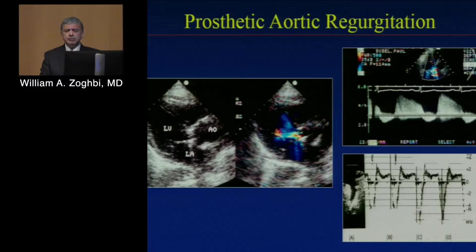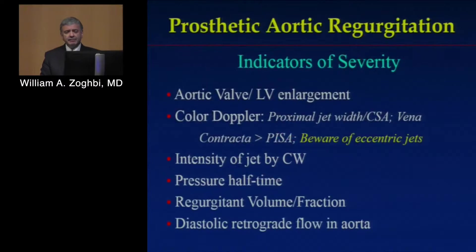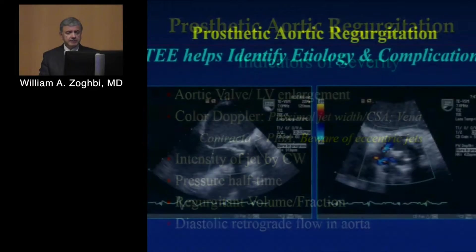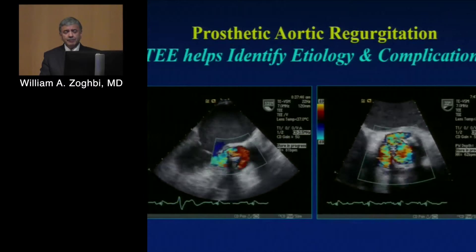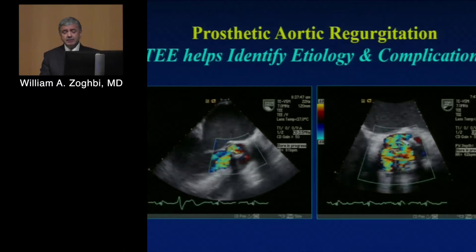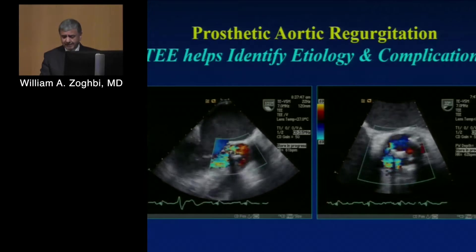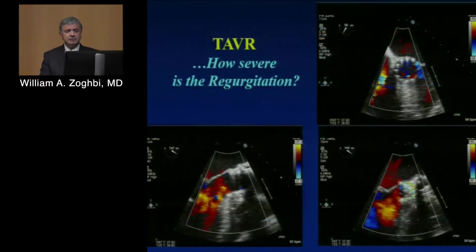Aortic regurgitation is much easier — you use the same approach as for native aortic regurgitation. But in a prosthetic valve you must be aware of eccentric jets, which are very important. You have to use other methods — volumetric flow, reversal in the ascending aorta. This is an eccentric jet and it's significant. By TEE you can examine the mechanism: is this central or eccentric? In one particular patient, there was a small abscess in the intervalvular fibrosa with visible pulsations, which tells you a great deal about the etiology.